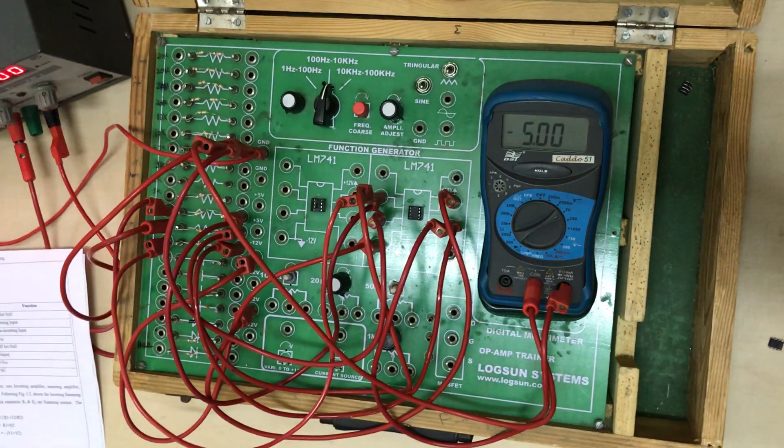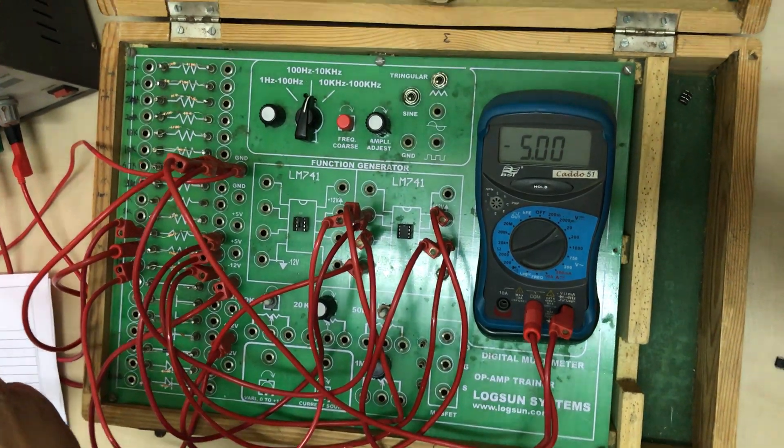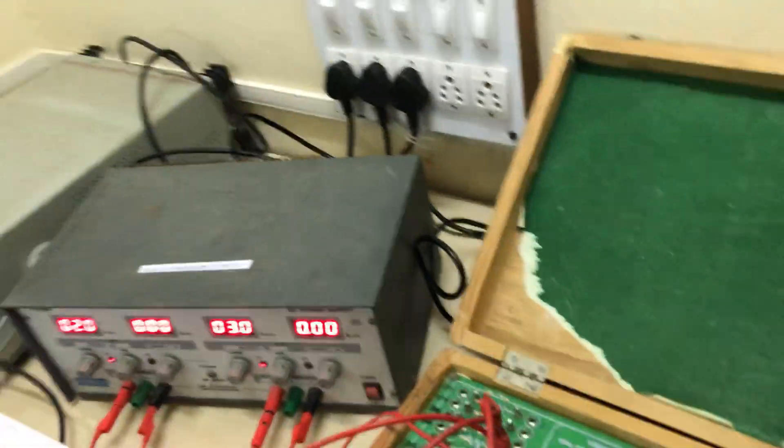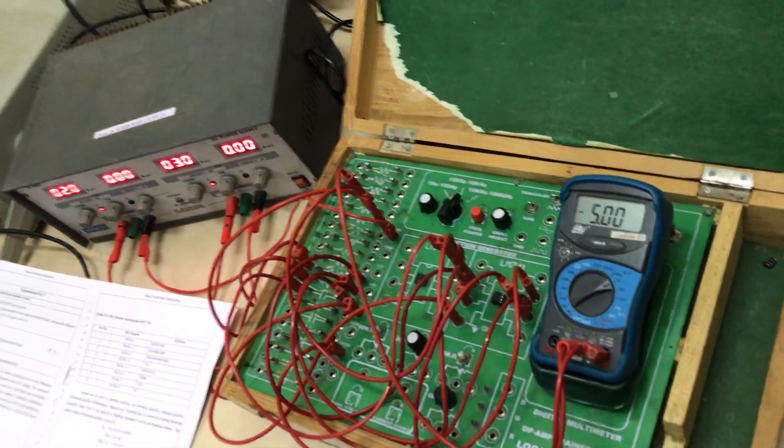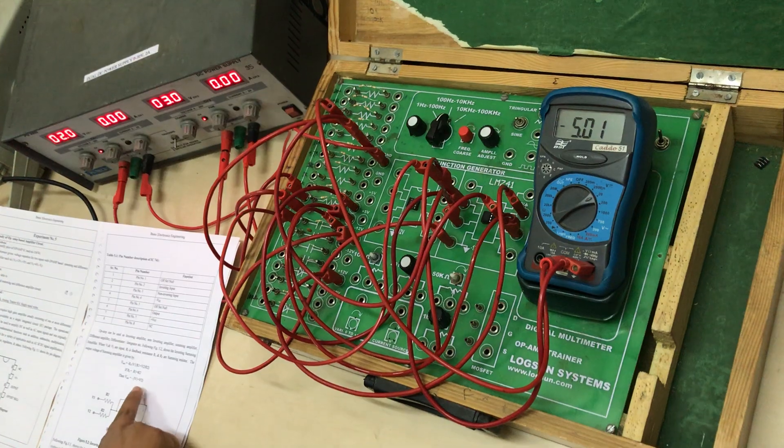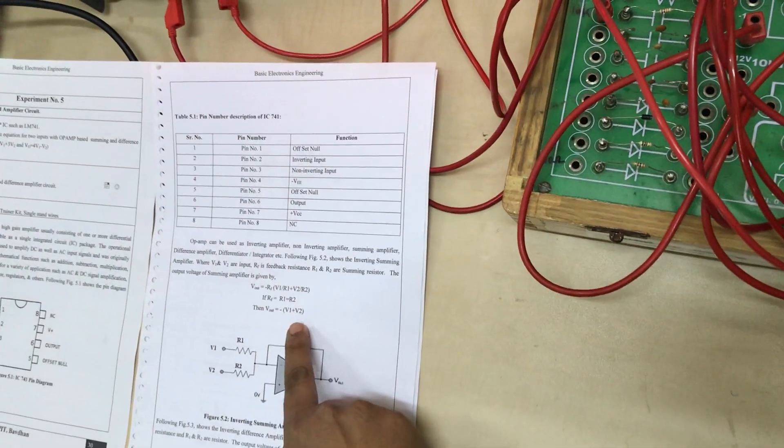This is the connection already done according to the diagram and this is the power supply. From this power supply we have to give a supply of V1, V2. If all resistors are same then we know the equation V output, that is equal to minus of V1 plus V2.